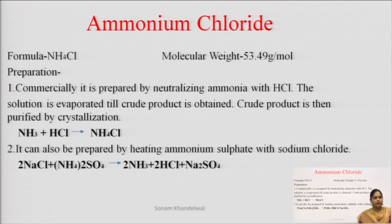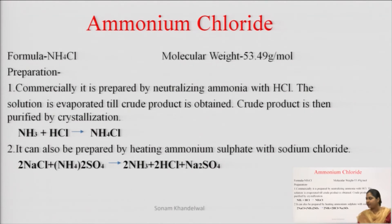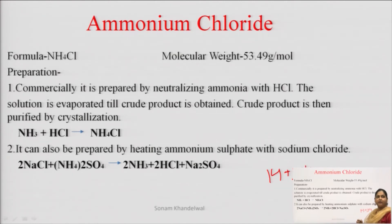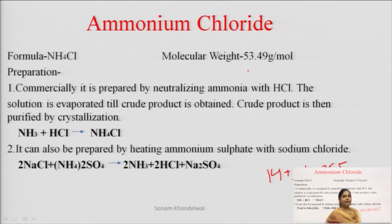Ismein ab hum padhenge different compounds ke baare mein jo ki acidifying agents ya phir acidifiers ka kaam karte hain. Sabse pehle hai ammonium chloride, that is NH4Cl. Iska jo molecular weight hai woh hai 53.49 gram per mole. Molecular weight nikalne ke liye hum kya karte hain — jo bhi humara molecular formula hai uske individual elements hain unka hum molecular weight add karte hain. Jaise ki NH4Cl hai toh nitrogen is 14, hydrogen is 1, toh yeh ho jayega 1×4, uske alawa Cl is 35.5 — in sab ko add karne par ammonium chloride ka molecular weight aata hai, that is 53.49 gram per mole.